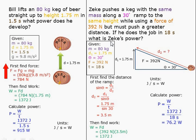First I determine what information is given. The mass is the same, the ramp is 30 degrees, the displacement is 1.75 meters, the force is 392 newtons, and the time is 18 seconds.